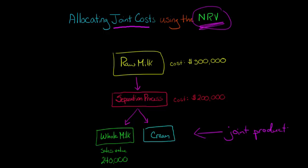Normally we'd say, what are the sales value of each of these products at this point? Well, the whole milk could be sold right now for $240,000. And normally we'd have a sales value for cream also. This is the split off point where these products can be separately sold. However, let's just assume here that we don't know the sales value for cream at this point.